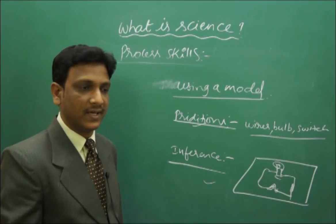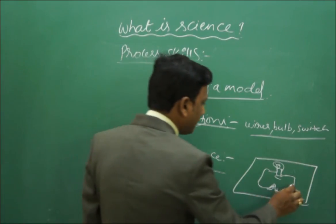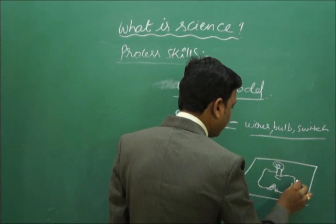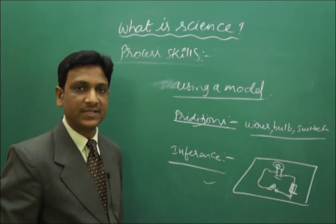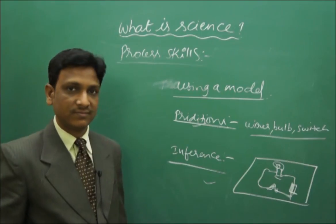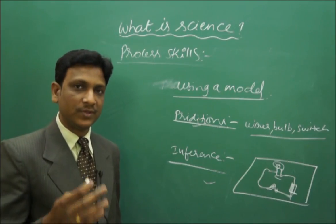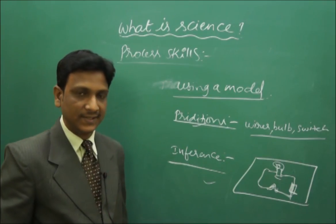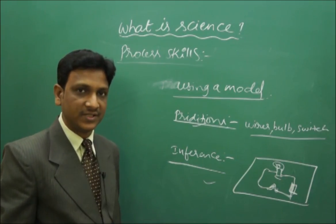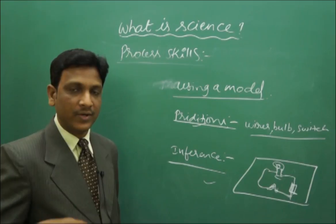We know that if we connect like this circuit, if we keep a battery, wire, and bulb, then if you make a circuit it will glow. So that experience we have, that is the prediction. We can prove the prediction is correct or not by making the model. Yes, we made the model, the bulb lit, so our experimentation, our prediction is correct.